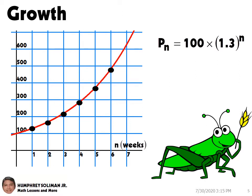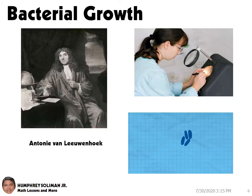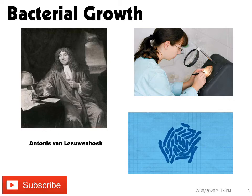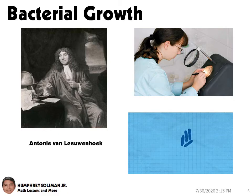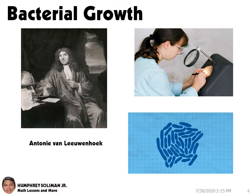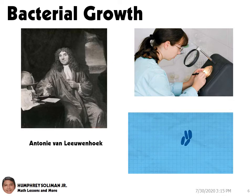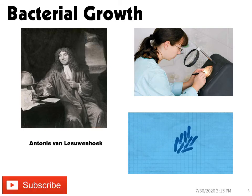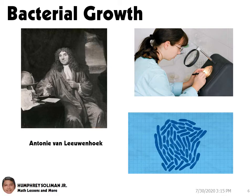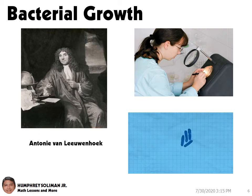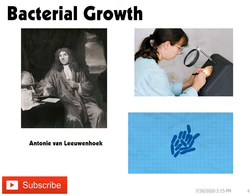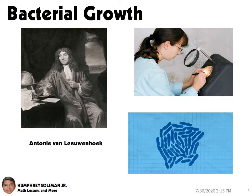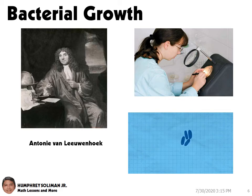The first person to see microorganisms was probably the Dutch naturalist Antony van Leeuwenhoek, who in 1683 described some animalcules, as they were then called, in water, saliva, and other substances. These had been seen with a simple lens magnifying about 100 to 150 diameters. The organisms seemed to correspond with some of the very large forms of bacteria as now recognized.